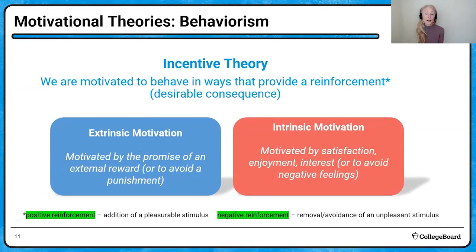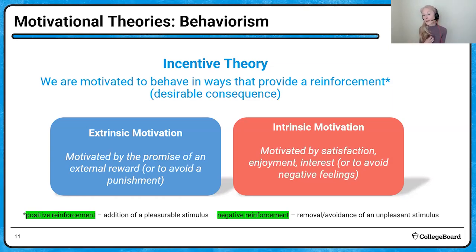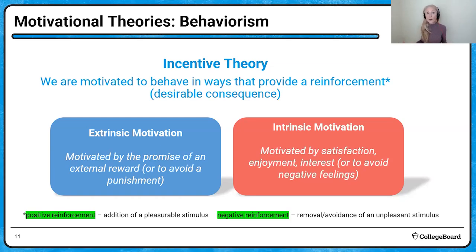Let's move on to incentive theory. This theory says we are motivated in ways that will provide us some kind of reinforcement — a desirable consequence. Those desirable consequences may come from outside, like praise, avoiding punishment, or monetary rewards, but they could also come from inside — intrinsic motivators, where we're motivated to do something because it just makes us feel good. Both positive reinforcement — addition of a pleasurable stimulus — and negative reinforcement — removal of an unpleasant stimulus — can be motivating factors.